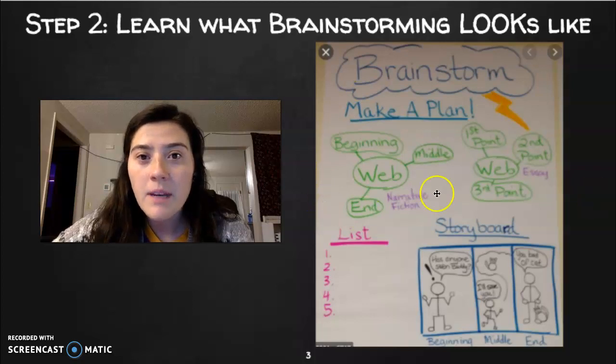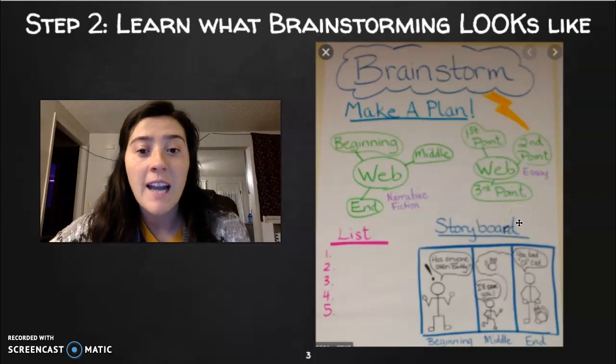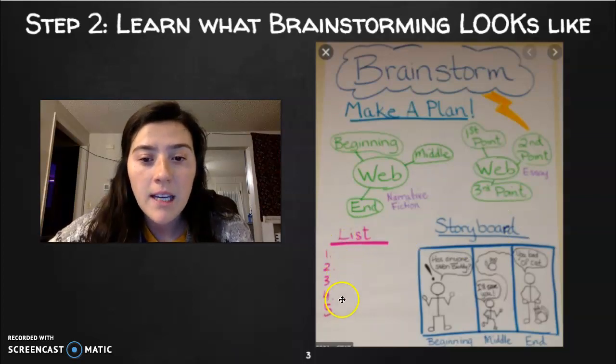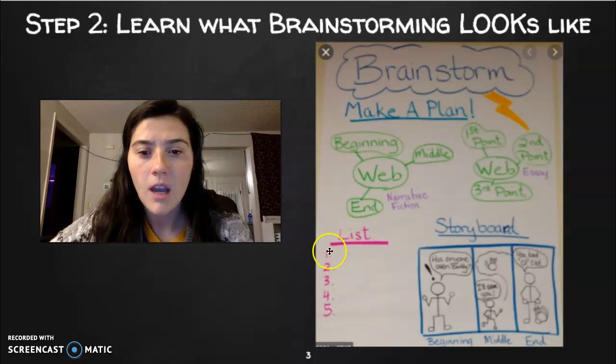First, we need to make a plan about what we're going to write about. There are three major ways you can brainstorm your ideas. You can make a list and write out all the things that happened.